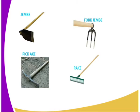Then we have the jembe and fork jembe. They are used whenever primary and secondary cultivation are carried out. Then we have the pickaxe, which is used for digging hard grounds, especially the hard pans. And we have the rake, which is used to collect trash in the field, especially during secondary cultivation.